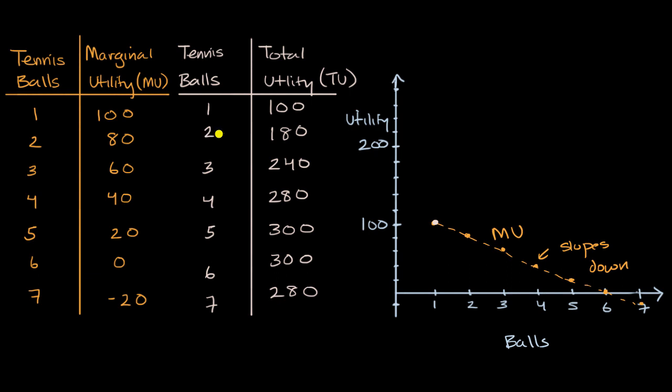But then your total utility from two balls, well, I had 100 utility units from the first ball. And then I get 80 more from that second ball, so it's going to be 180. So for two balls, my total utility is 180. All I'm doing is I just added that to that. Now for three balls, I add that to that to that. I take 180, and I add the 60 extra utility units I get for that third ball, and now I'm at 240. So that third ball gets me to 240 right over there.